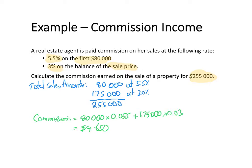We'll put that into a sentence to answer the question: the commission on the sale of the property is $9,650. That's an example of how we can calculate someone's commission income based on the sales and the commission rate provided.